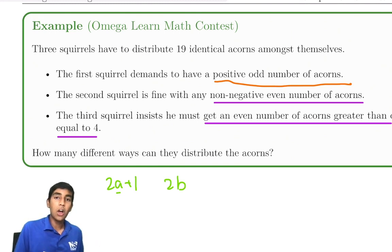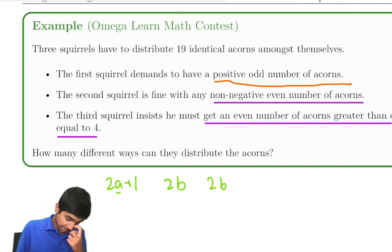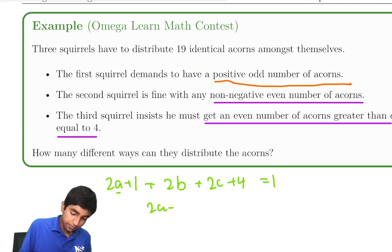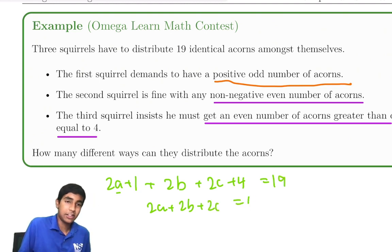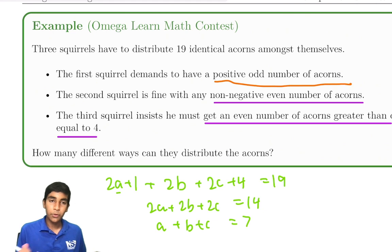Third squirrel insists on getting an even number greater than or equal to 4, so let's say 2c + 4. The sum of these must be 19, so 2a + 1 + 2b + 2c + 4 equals 19. That gives us 2a + 2b + 2c equals 14, and let's just divide by 2: a + b + c equals 7. That looks a lot like stars and bars.